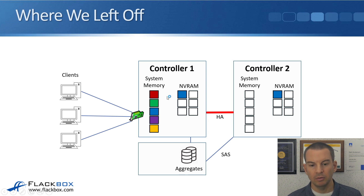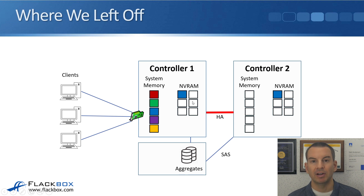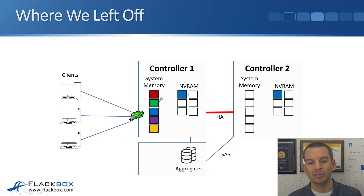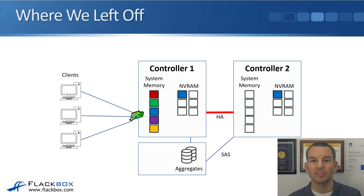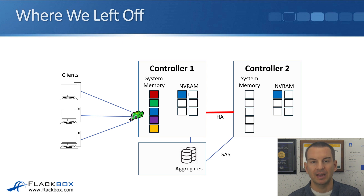When the consistency point writes the data to the aggregates, NVRAM is emptied and we start again. We do not empty system memory though, because system memory improves the read performance of the system. We want to make the best use of that, keeping it full with the hottest — most frequently and most recently accessed — data possible. So that was how our writes work.